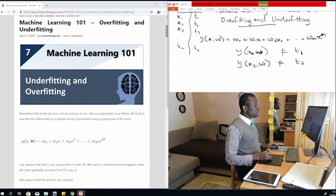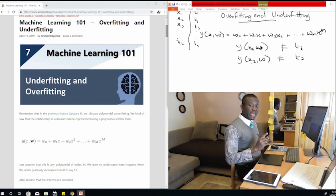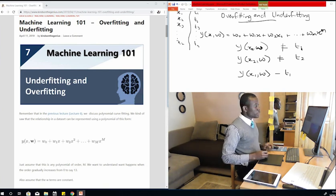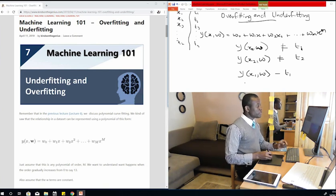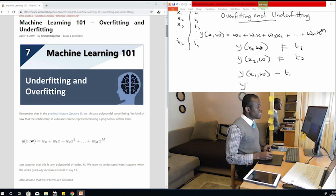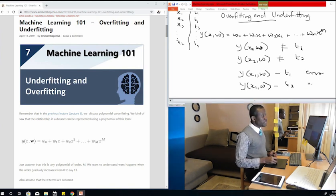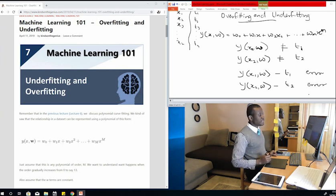What it means is that there is an error that follows you along every calculation you made. So that error is given by y(x1,w) minus t1. This is the error that follows along for every calculation you make.